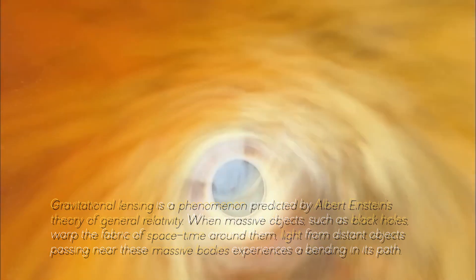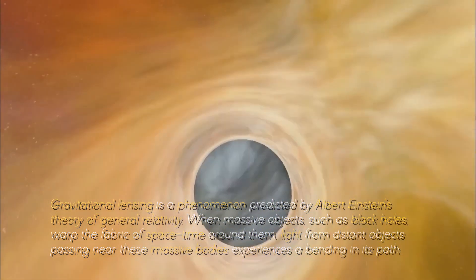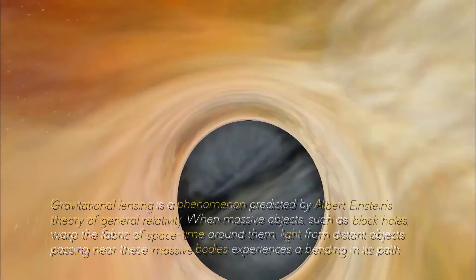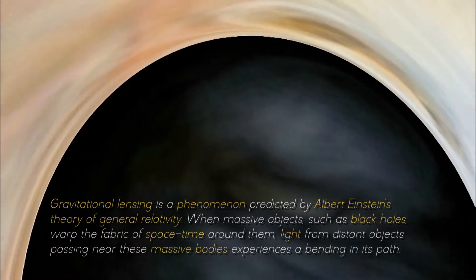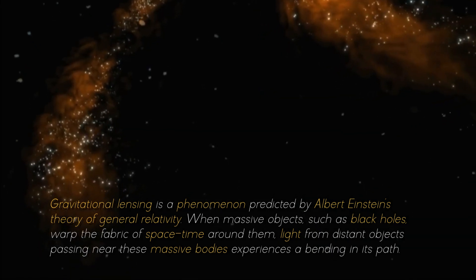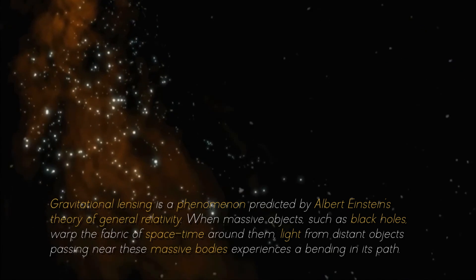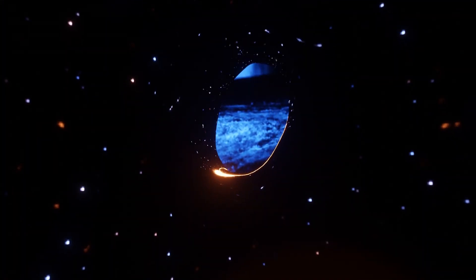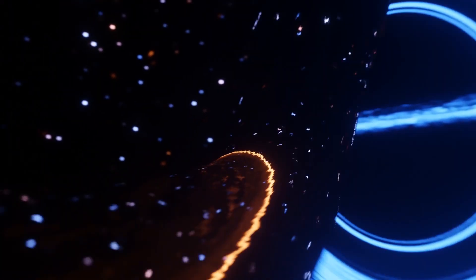Gravitational lensing is a phenomenon predicted by Albert Einstein's theory of general relativity. When massive objects, such as black holes, warp the fabric of space-time around them, light from distant objects passing near these massive bodies experiences a bending in its path. This results in a visual distortion or magnification of the object's image.